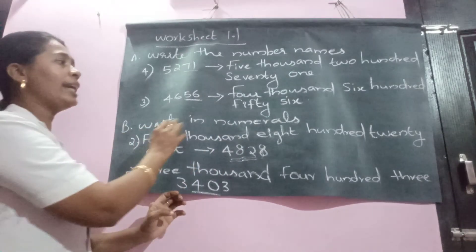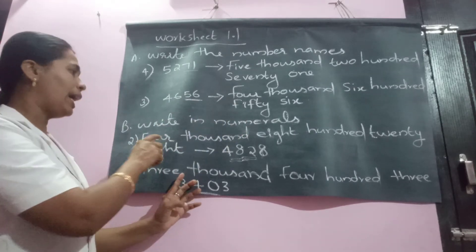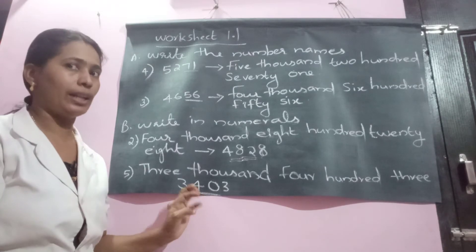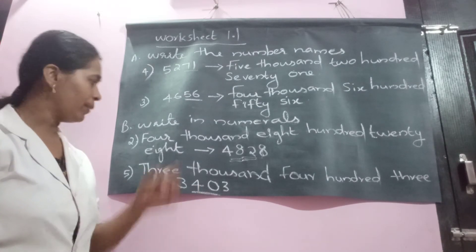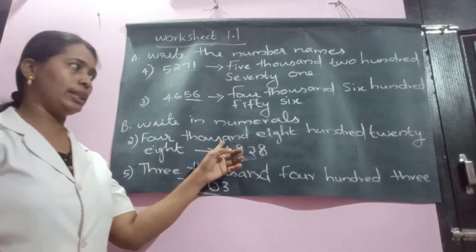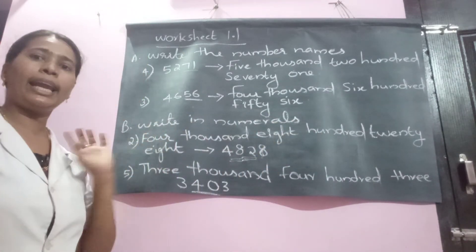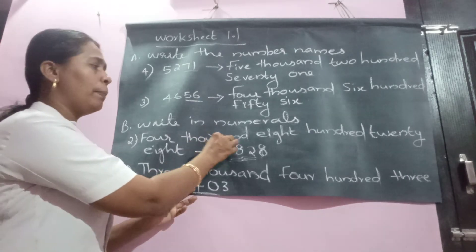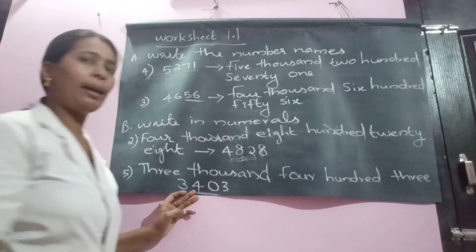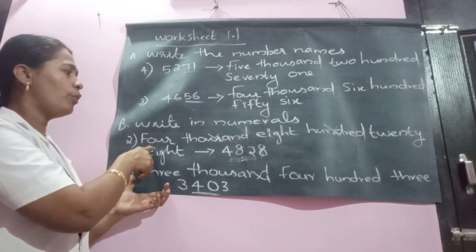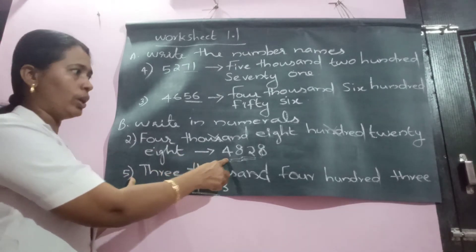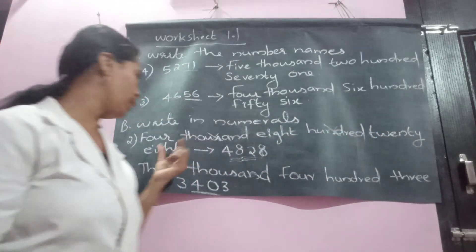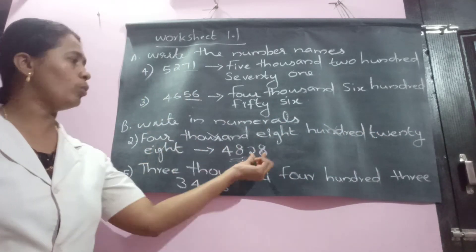Let us move to section B: write in numerals. A number name is given and you have to write the corresponding number — that is very easy. For example, four thousand eight hundred twenty-eight is given. Avoid the place value words and just write the digits: 4, then 8, then 2 and 8 together — giving 4828.